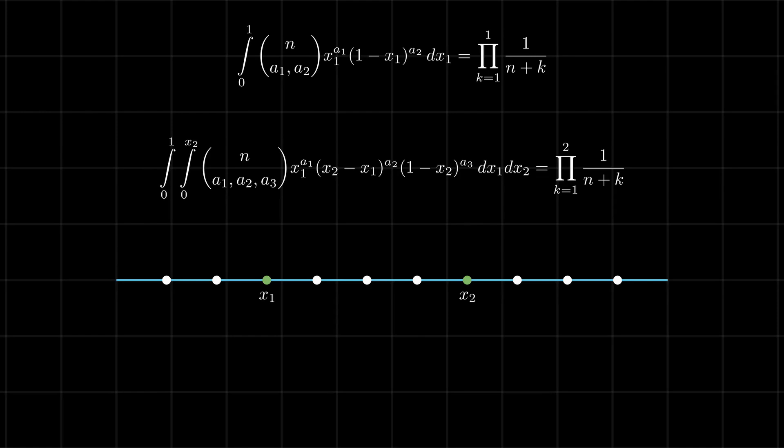Now, the probability that there are a1 white points before the first green point, a2 points between the two green points, and a3 white points after the second green point is given by the integral of the multinomial n a1 a2 a3, x1 power a1 into x2 minus x1 power a2 into 1 minus x2 power a3 dx1 dx2, where x1 and x2 are the positions of the green points.